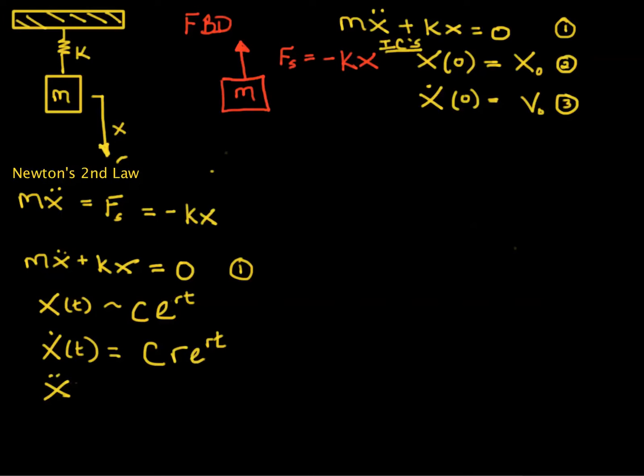And the double derivative, the second derivative, is equal to C r squared e to the rt. The idea with exponentials is, each time you take the derivative, you simply just multiply by r.